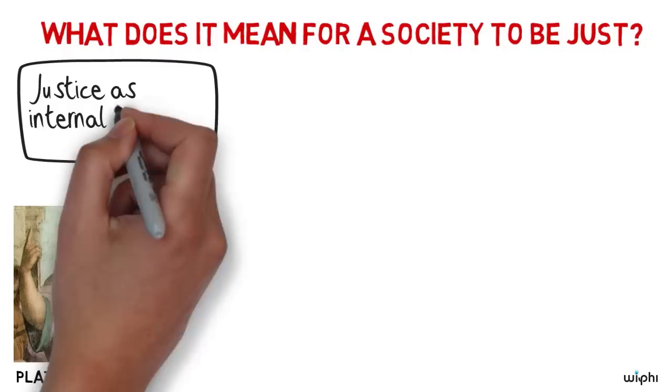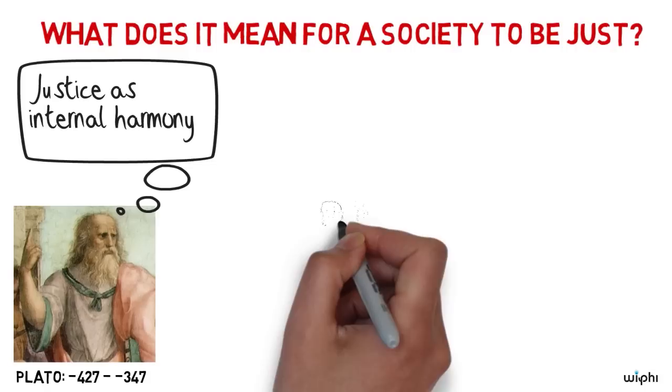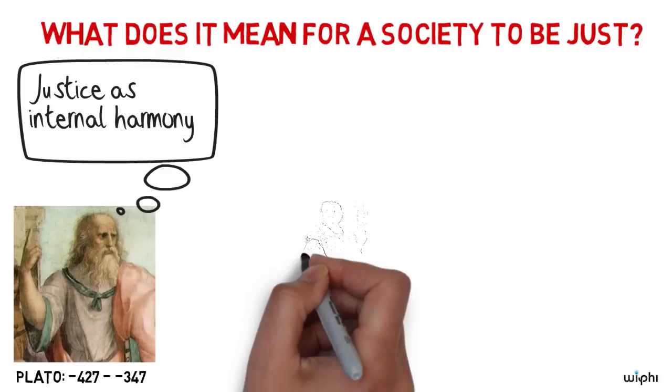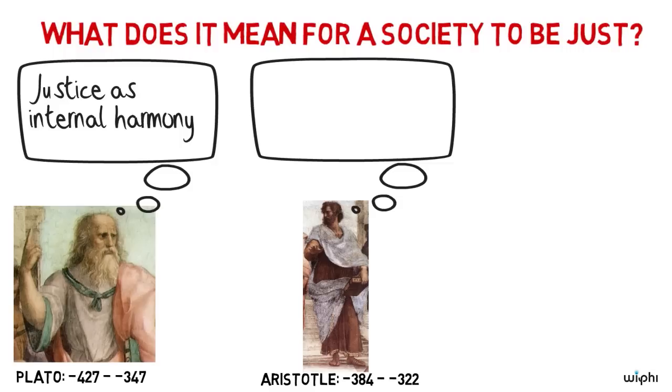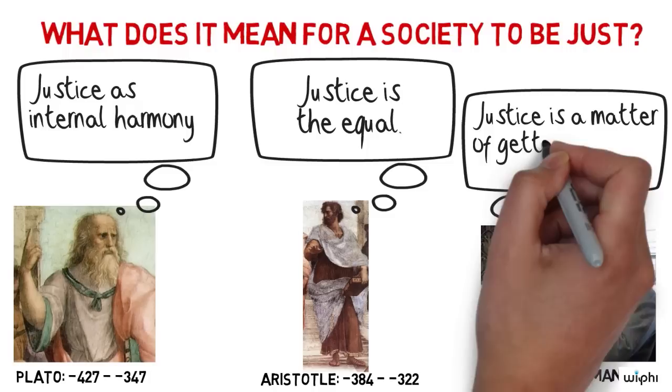That is, the parts of something, let's say an individual or a society, being ordered in the right way. For others, justice is importantly tied to notions like equality. So, for example, Aristotle says that justice is the equal, and others have tied justice to the idea of desert or what someone deserves.